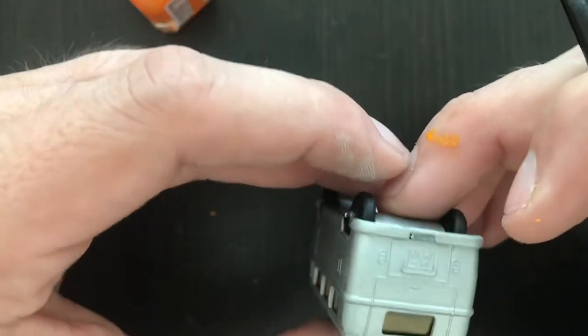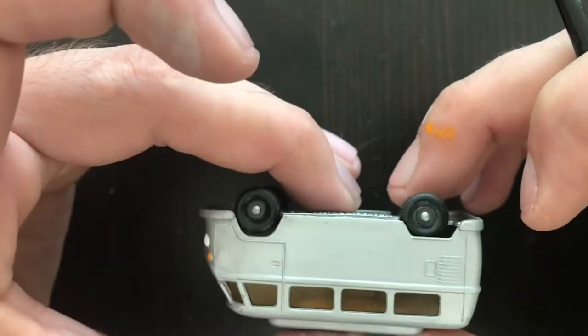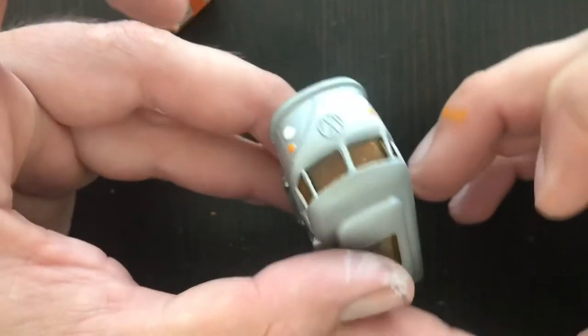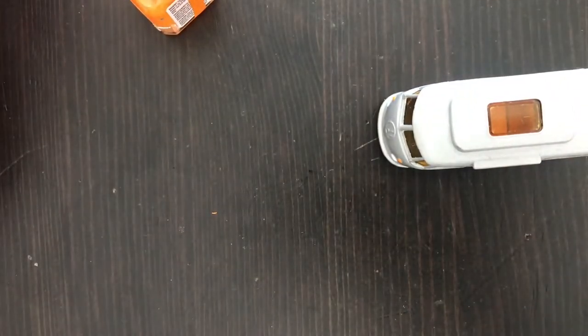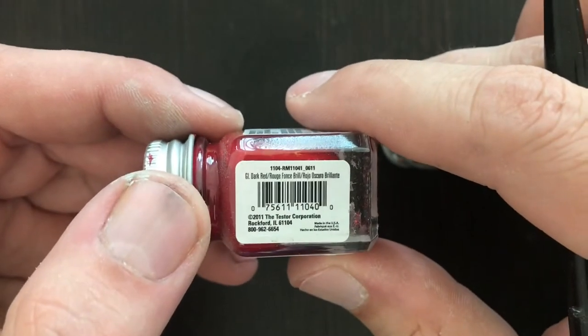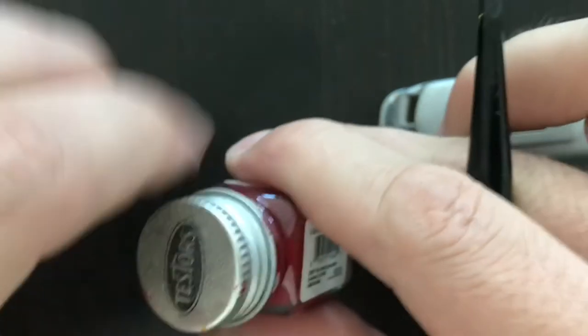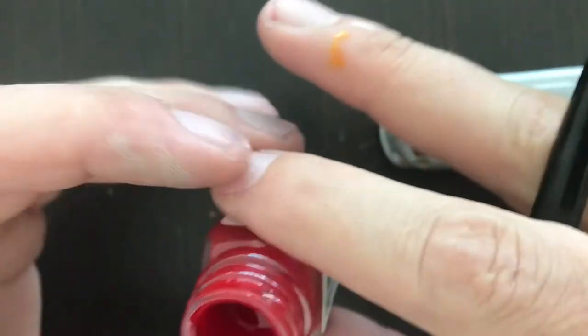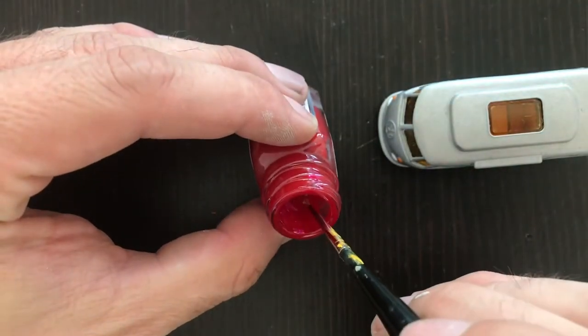So you can see, I'm just going to take some time here to paint in the headlights, the side markers, the turn signals, the taillights, and then we'll chrome out the VW logo on the front and the bumpers.